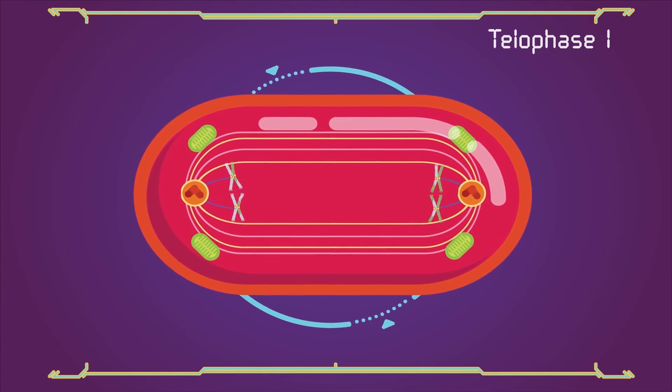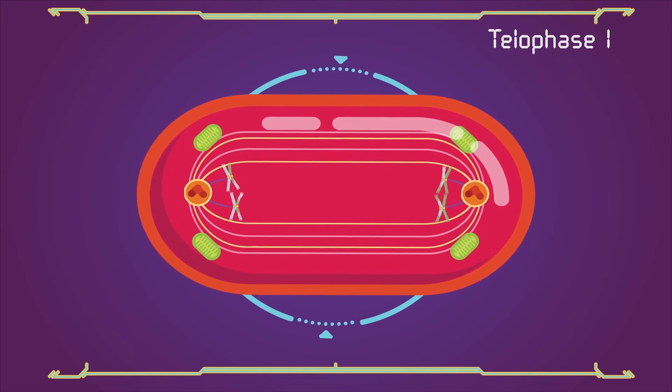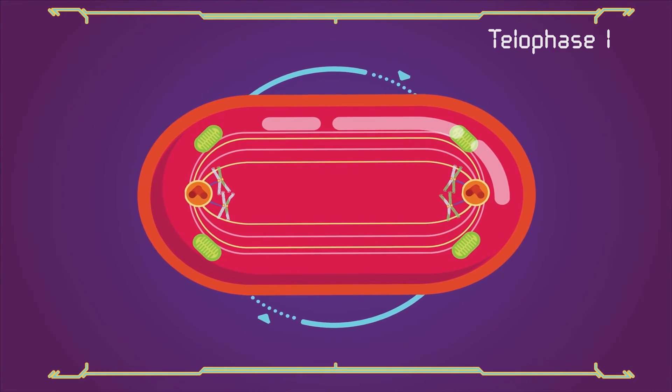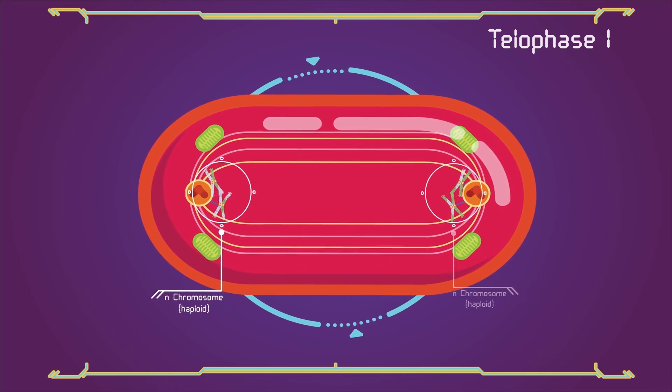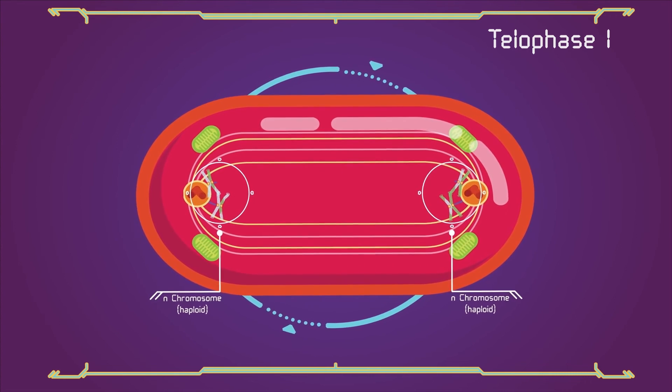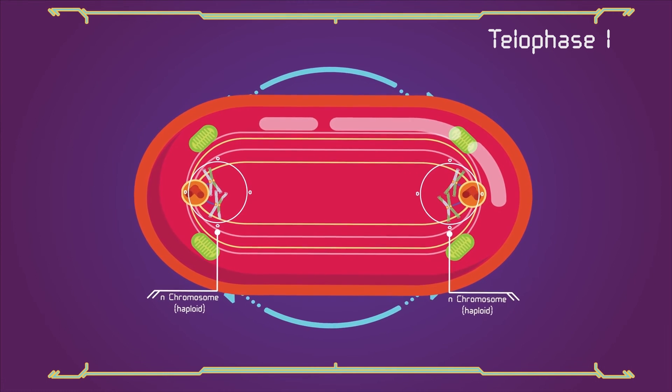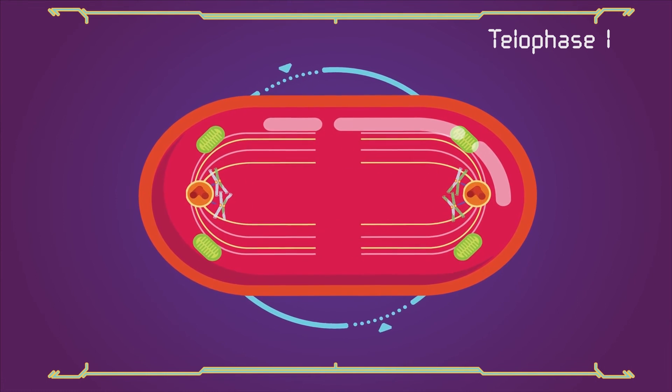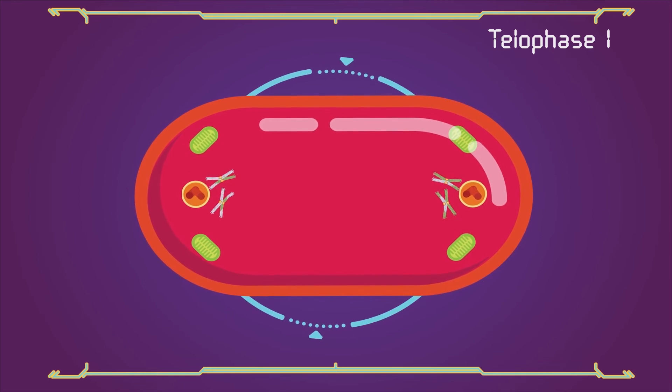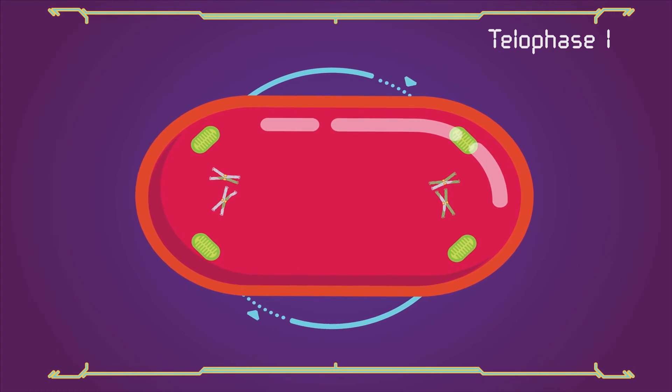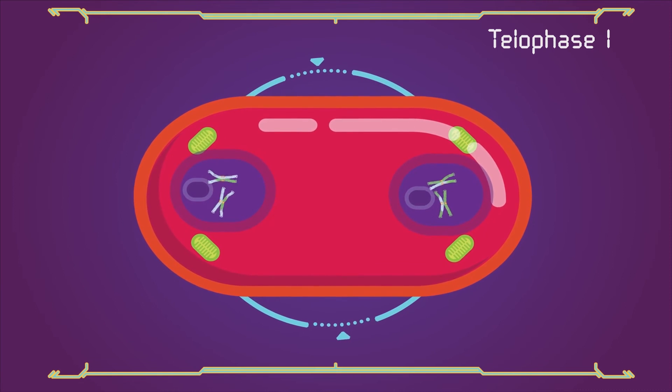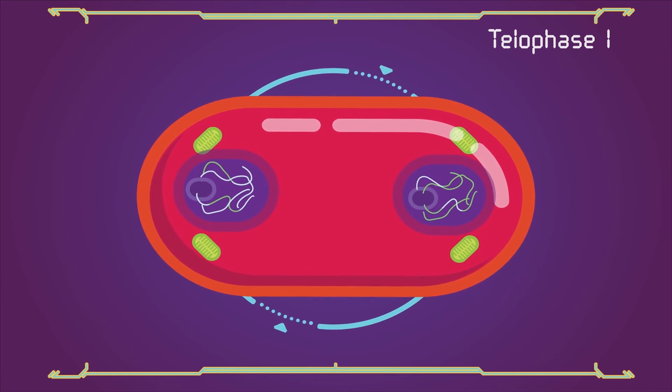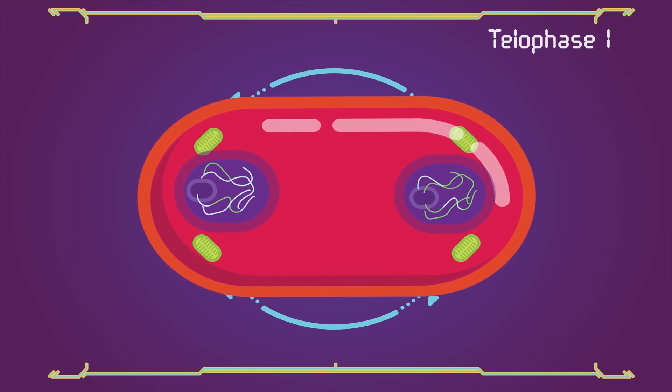Telophase 1: the first meiotic division effectively ends when the chromosomes arrive at the poles. Each daughter cell now has half the number of chromosomes, but each chromosome consists of a pair of chromatids. The microtubules that make up the spindle network disappear, and a new nuclear membrane surrounds each haploid set. The chromosomes uncoil back into chromatin.